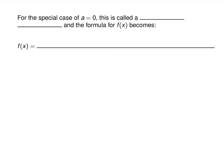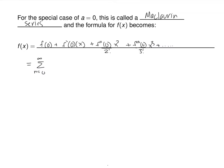There is often a special case: we often take a to be 0, and when we do, this is called a Maclaurin series. In this case the summation becomes f of 0, plus f prime of 0 times x, plus the second derivative at 0 times x squared over 2 factorial, plus the third derivative at 0 over 3 factorial times x cubed, and so on. In summation notation, that's the sum from n equals 0 to infinity of the nth derivative at 0 over n factorial times x to the n.